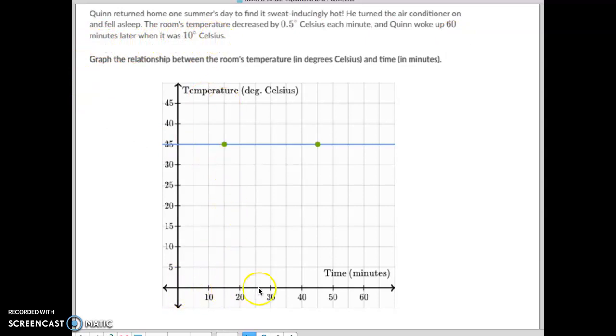So after 60 minutes of sleeping right over here, he noticed the temperature in the room was at 10 degrees. So we're going to put a dot right there. So at 10, 60 minutes, we're going to put a dot right here, and that's where the first dot goes.